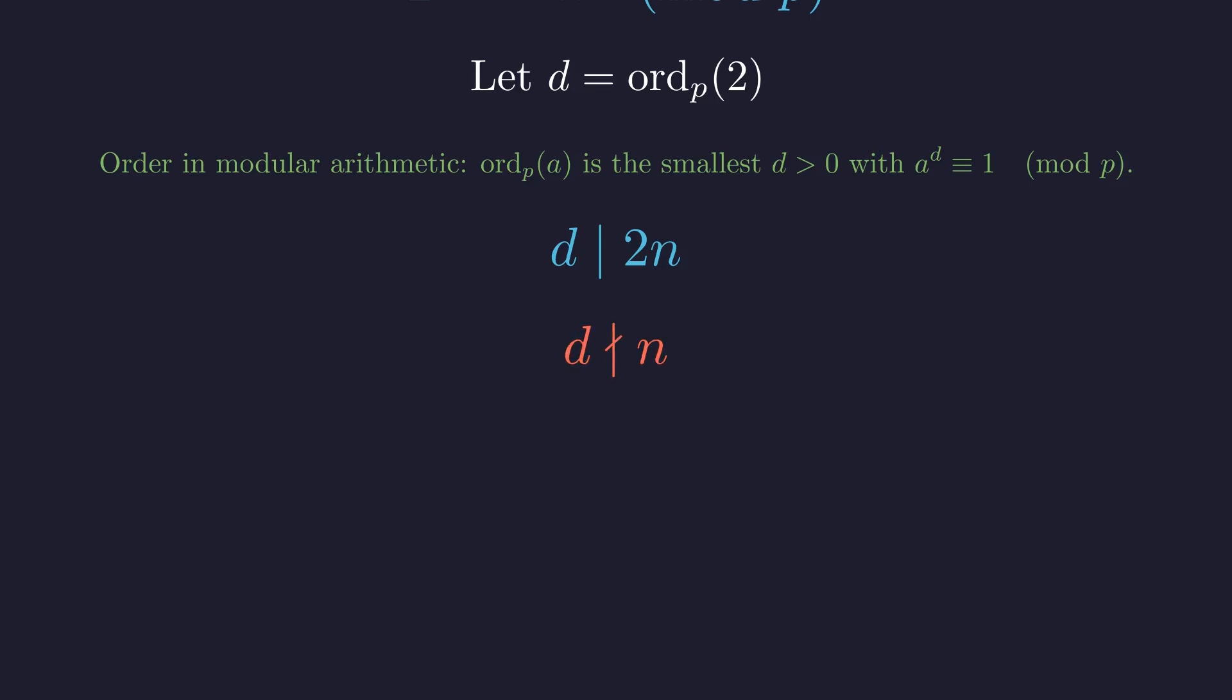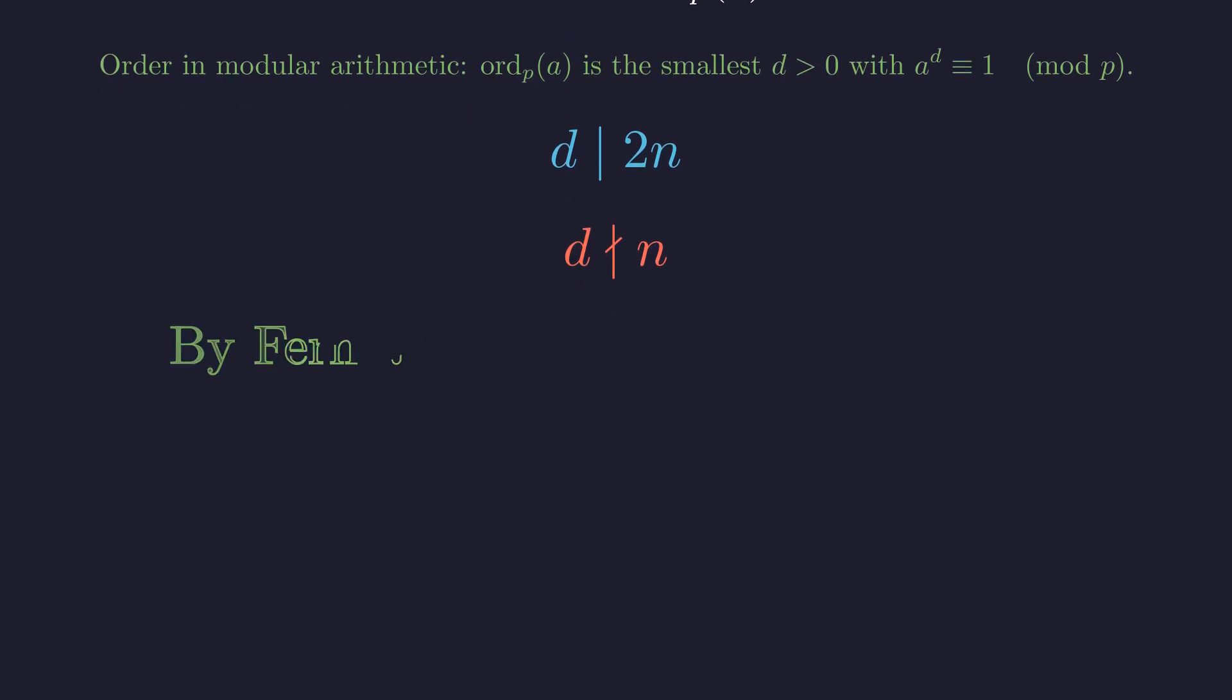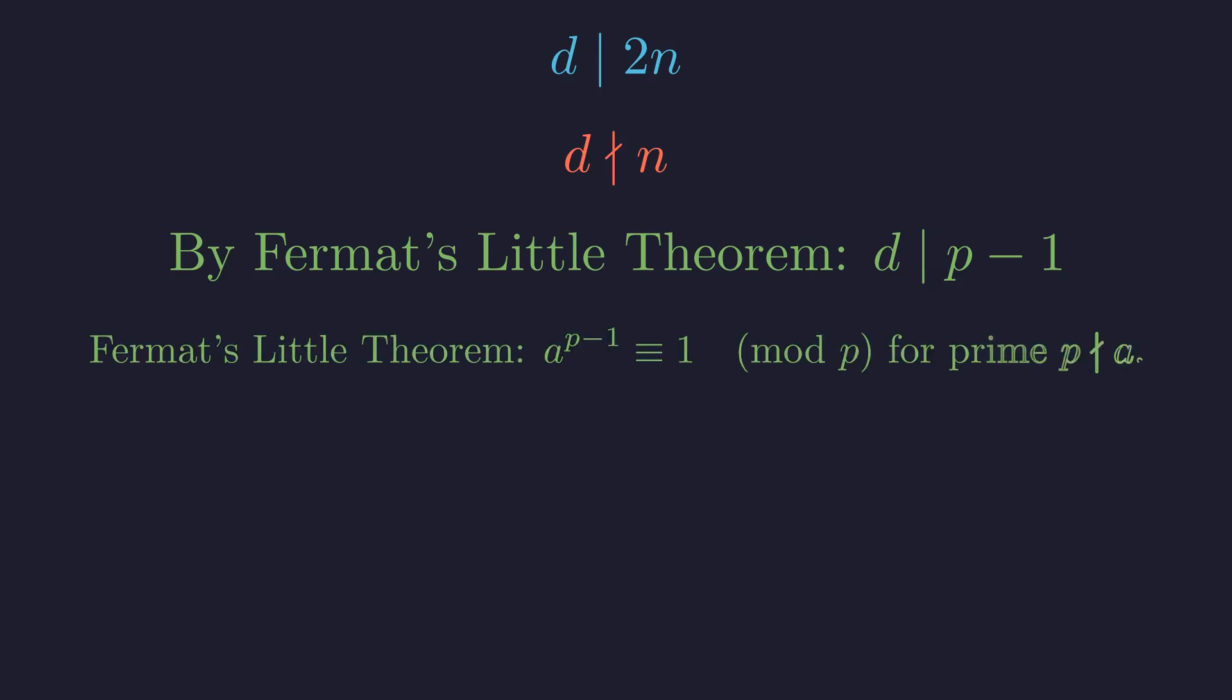And let's not forget Fermat's little theorem. It tells us that d must also divide p-1. Fermat's little theorem says that if p is a prime and does not divide a, then a to the p-1 is congruent to 1 modulo p. This means the order of a modulo p must divide p-1.